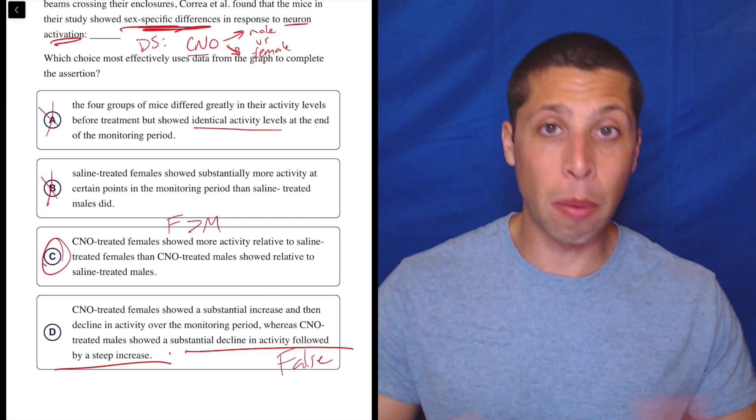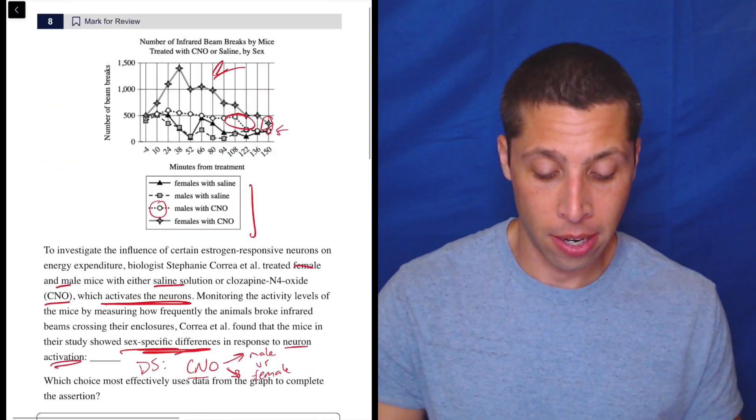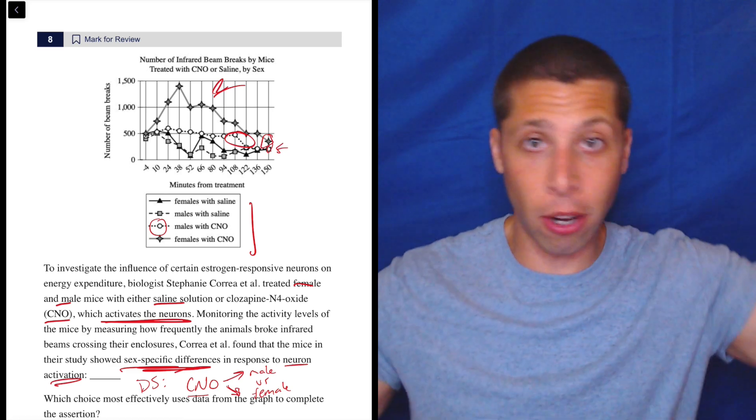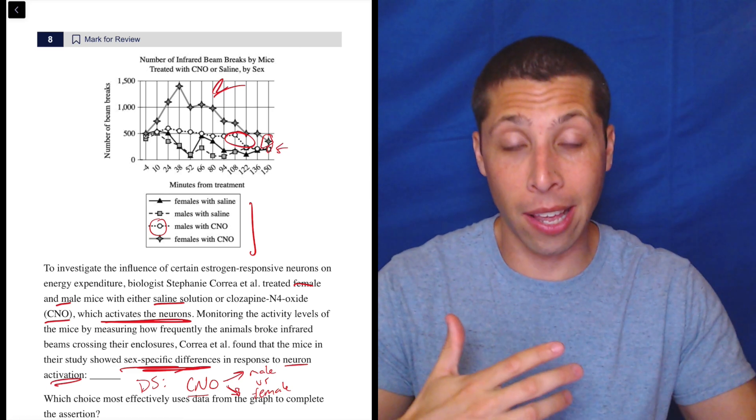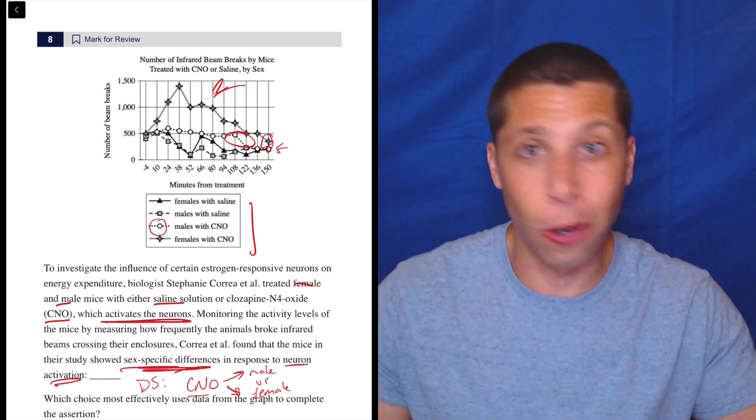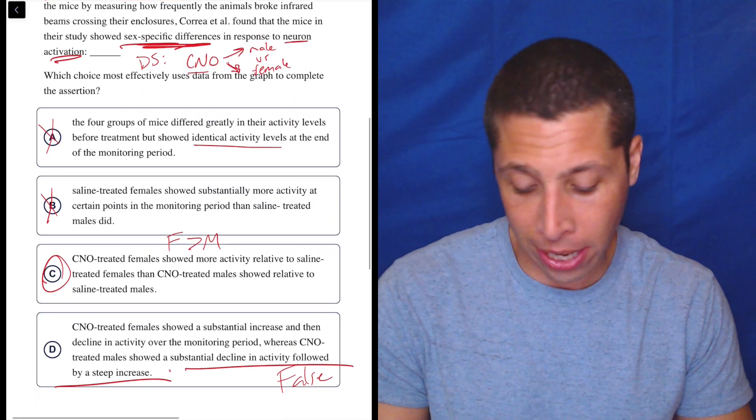So maybe I did a little bit more proof of C than I should have. I should have just said, the female line is all up there and the male line is lower. Seems like a difference. And they're both higher than the saline ones. So good enough for now.